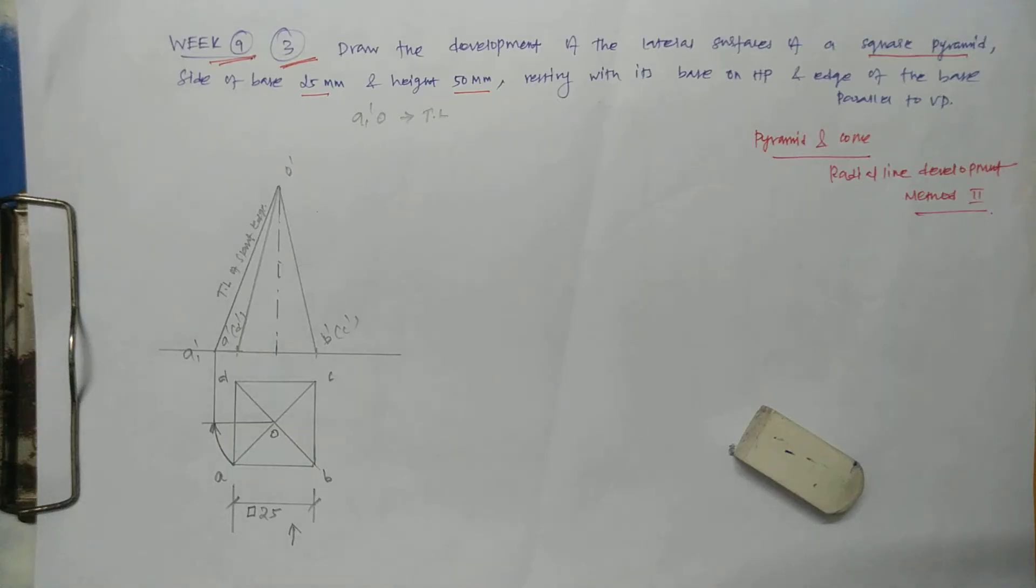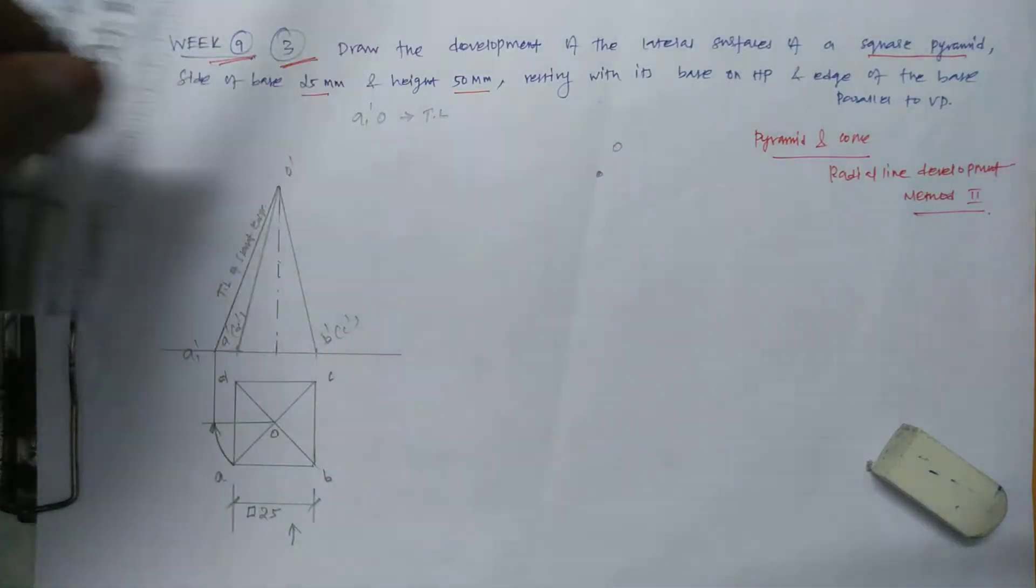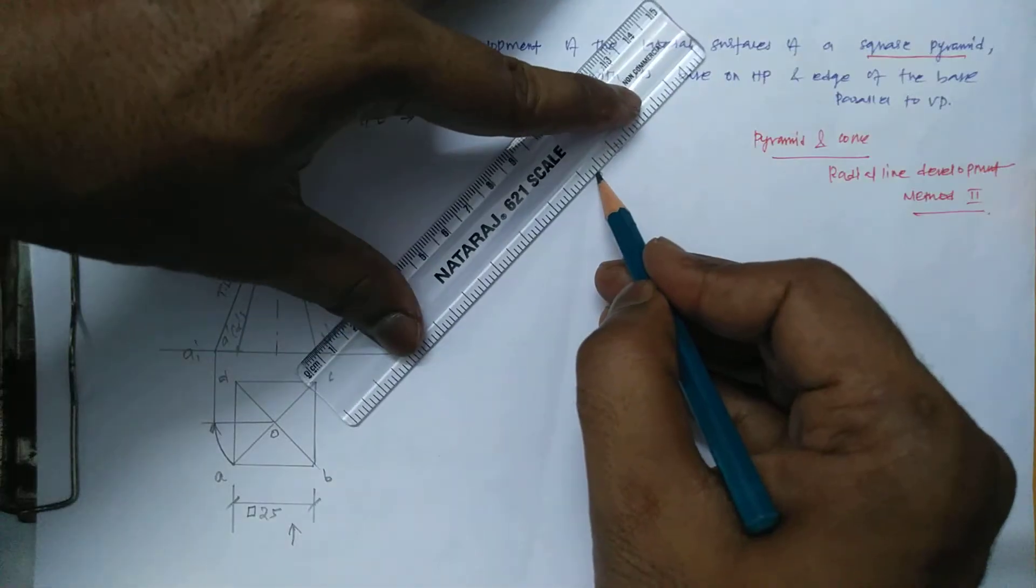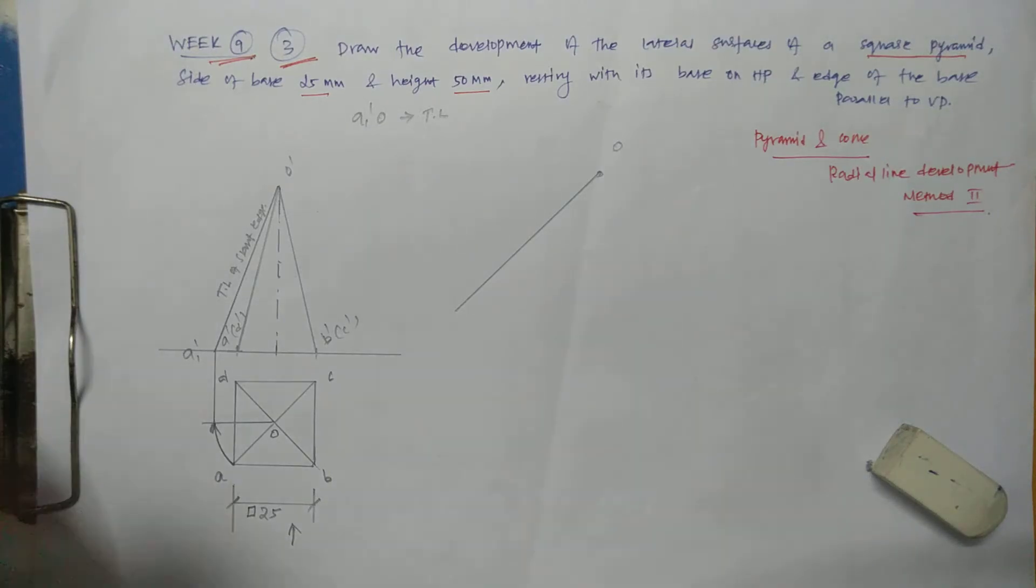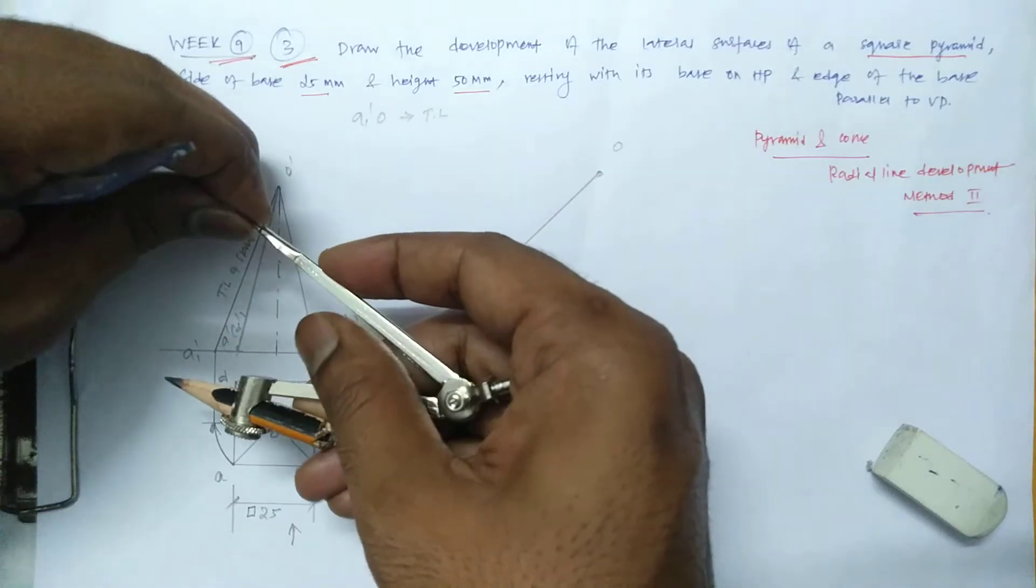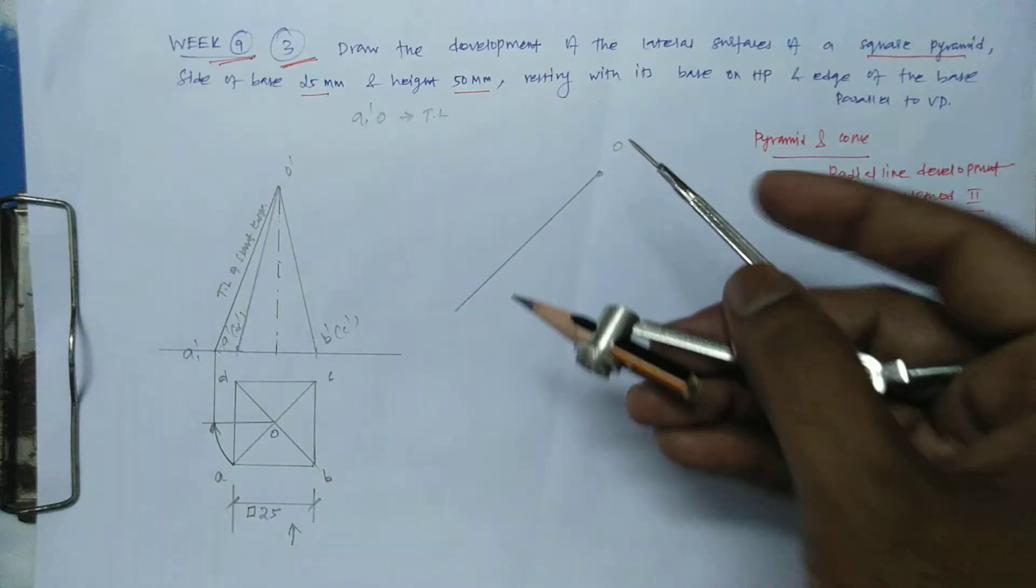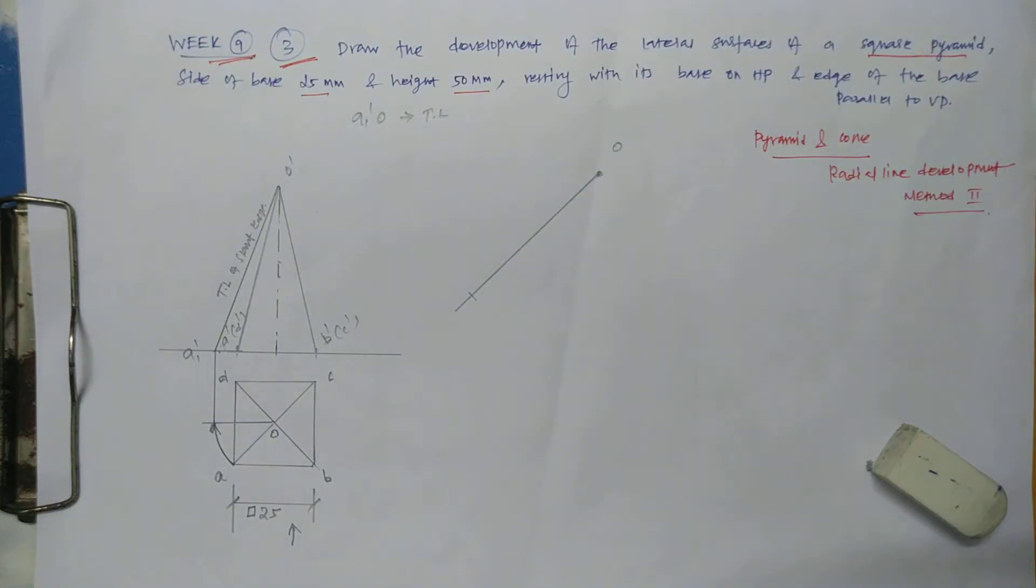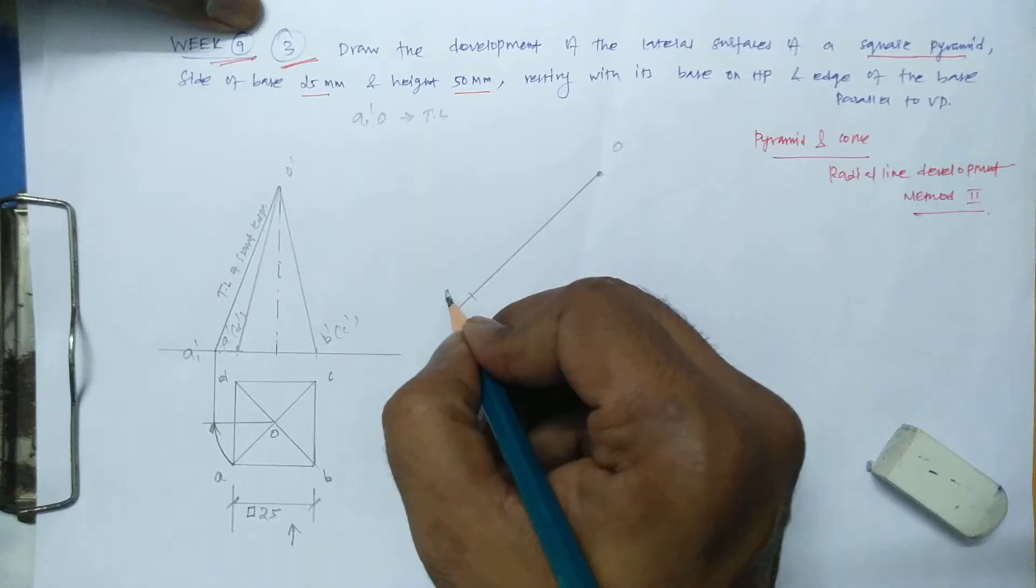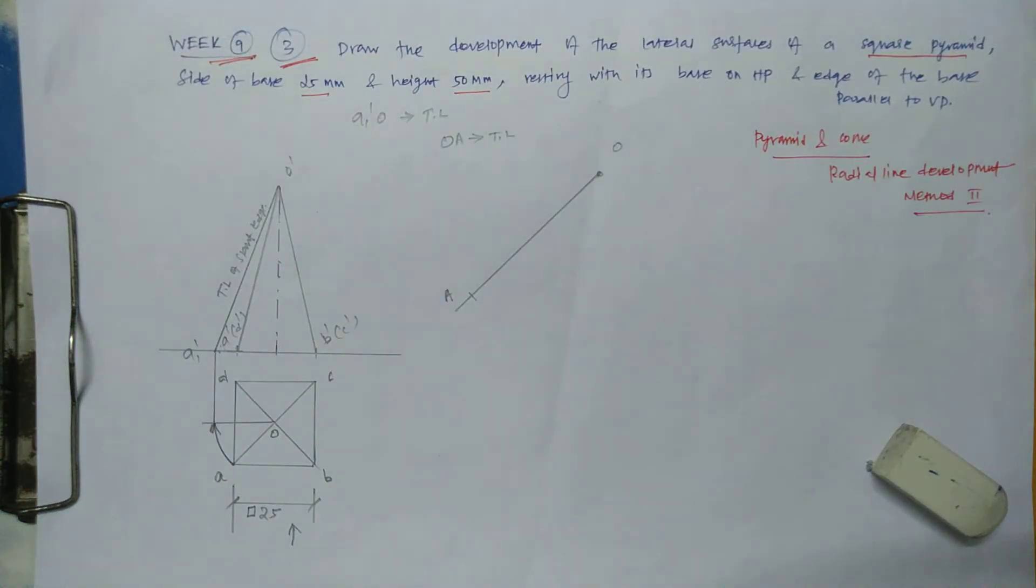Now, the radial line development. You need to identify radial line development. You can fix anywhere the O. This slant edge you can fix anywhere in the drawing sheet. So the length of this slanting edge you need to measure. This is the length of the slant edge. We said keep O as a center and this as the radius. So we can transfer that point that is nothing but O to capital A. So OA is nothing but true length.